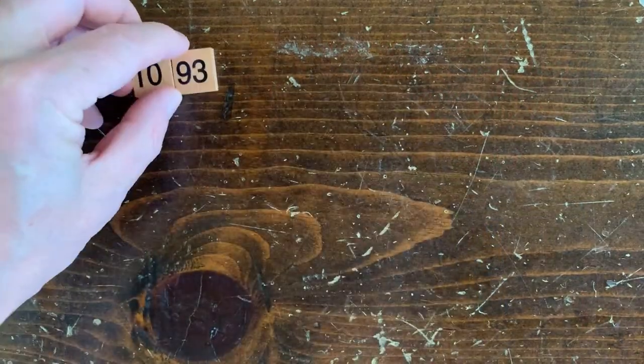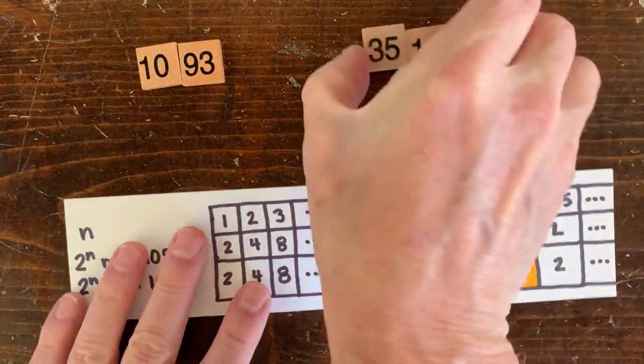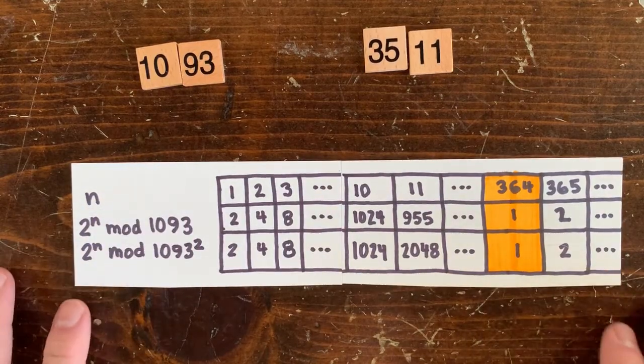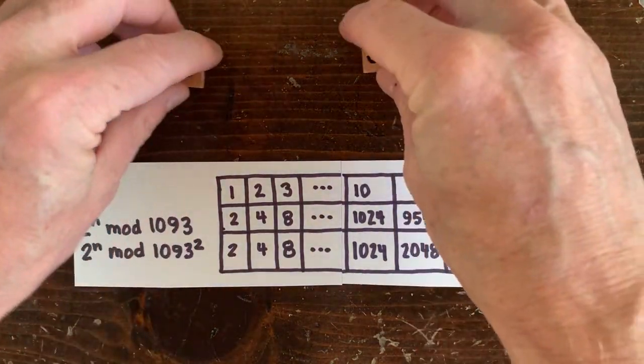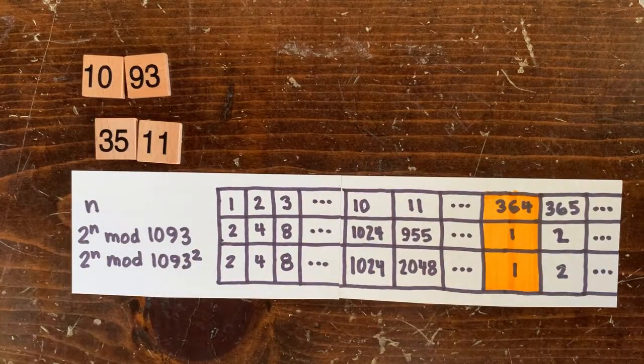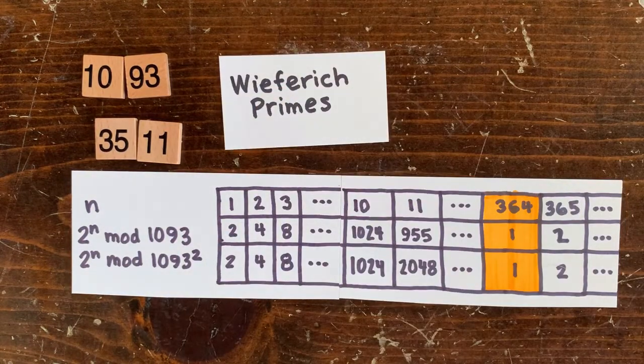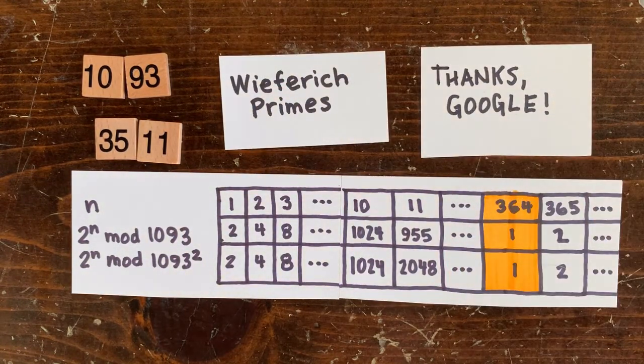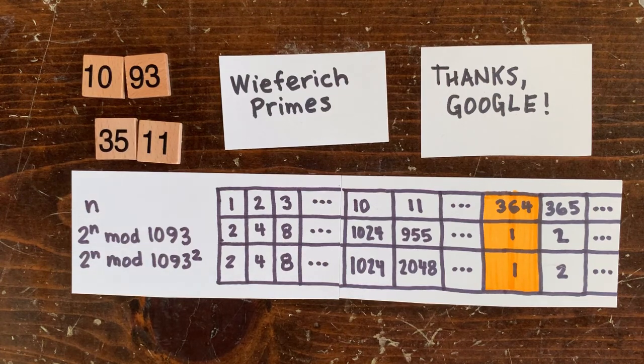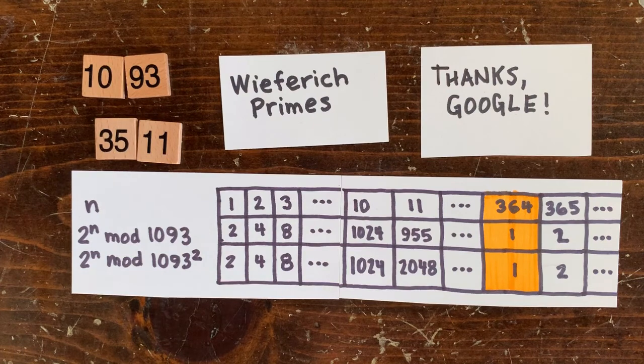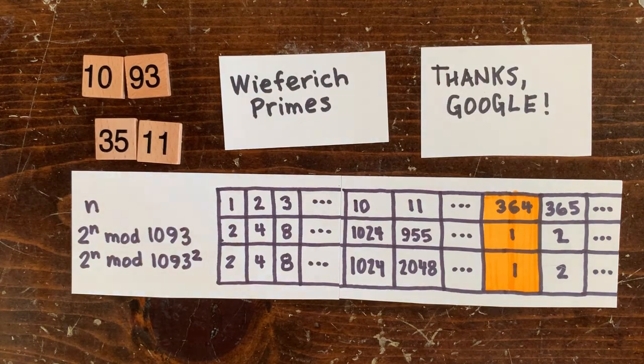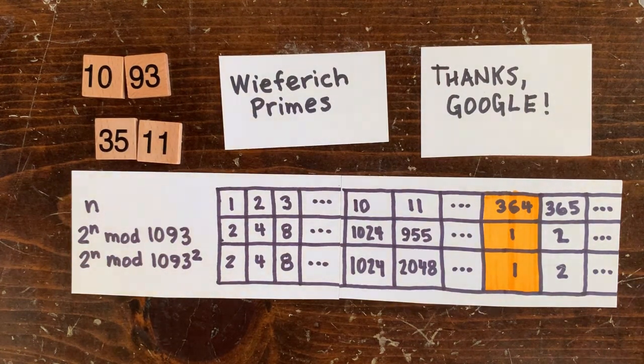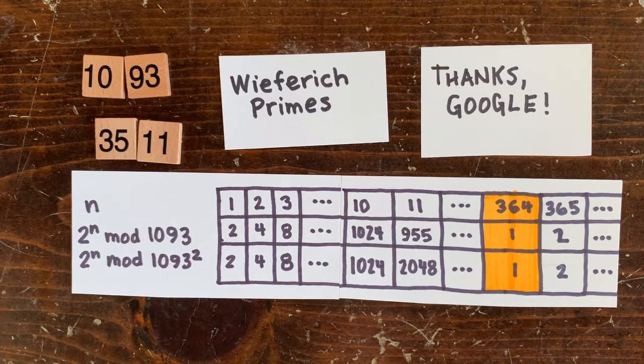So I searched for all the other numbers that behave like 1093. And I found the number 3511. So the 3511n plus 1 problem is also solved. And then I googled 1093 and 3511. And it turns out they're both called Wiefrich primes. Which is what mathematicians call numbers with this property. And they're the only known Wiefrich primes.